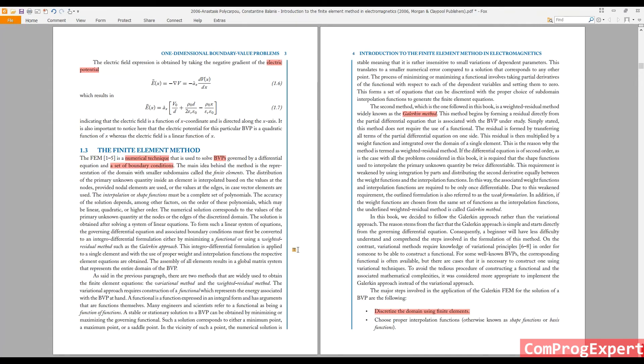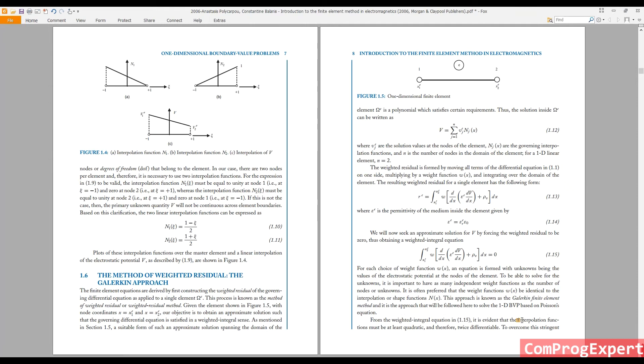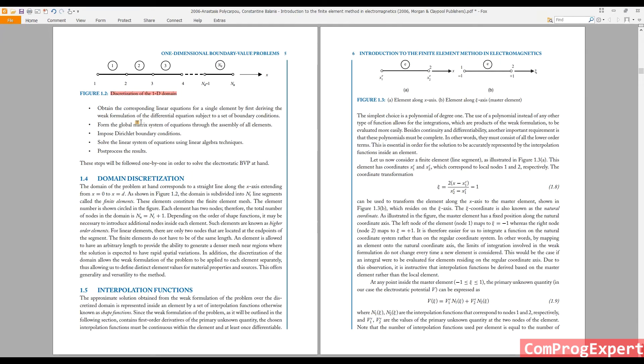This is the first step. The second step is selection of the proper interpolation functions or shape functions. I will explain shape functions, and then obtaining linear equations for each of these individual elements. These equations are derived using the weak formulation. I will explain these items in detail; this is just a review.